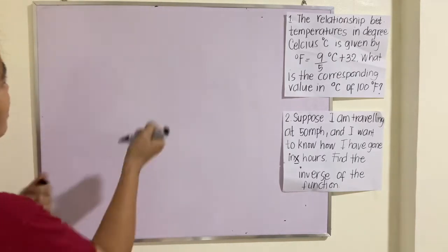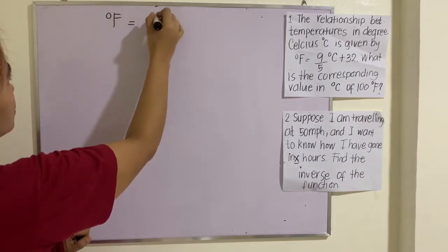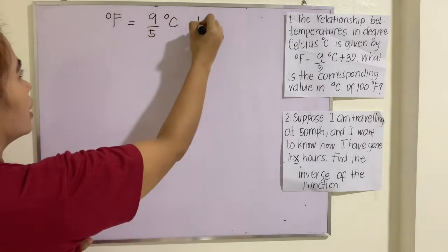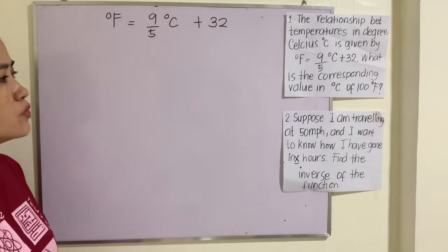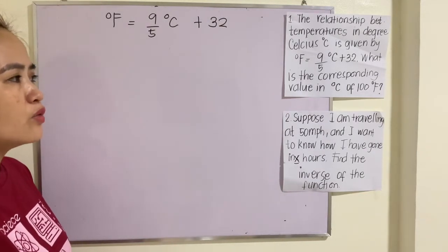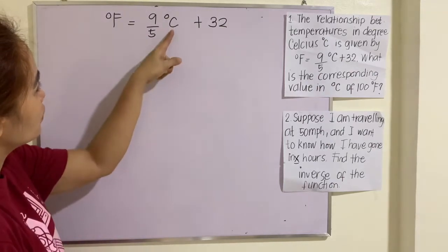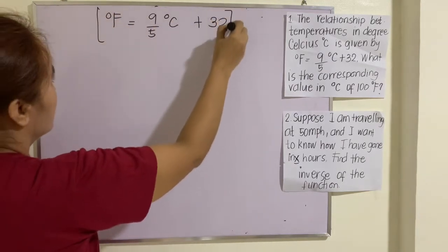How do we solve it? This is °F = (9/5)°C + 32. First, since we are asked to find the corresponding value of 100°F in Celsius, we will be solving for C. So we multiply everything by 5.